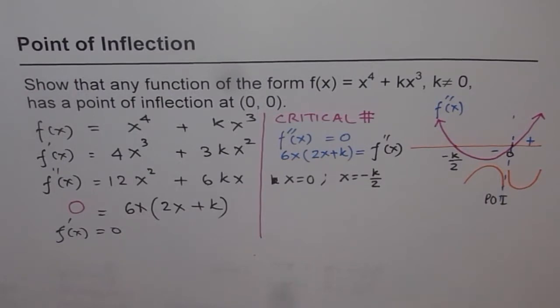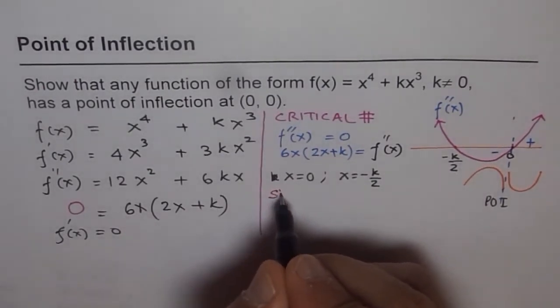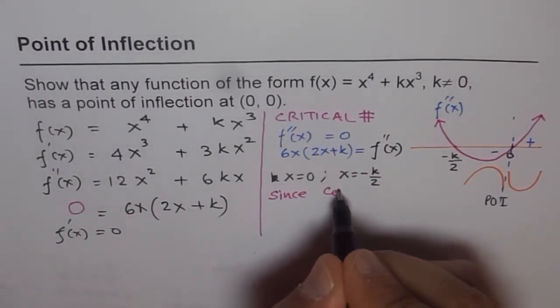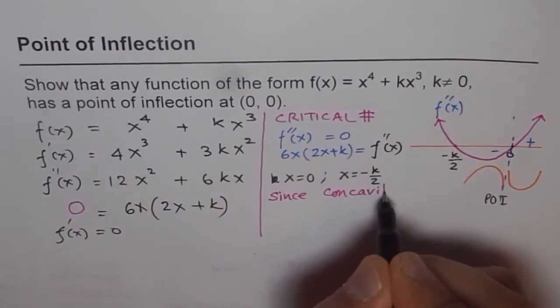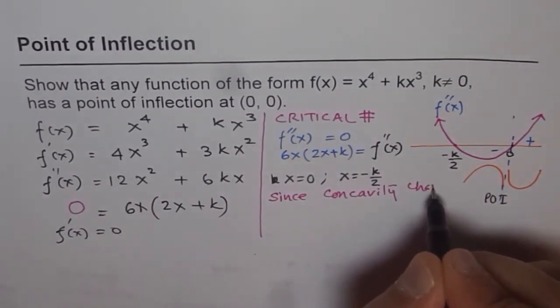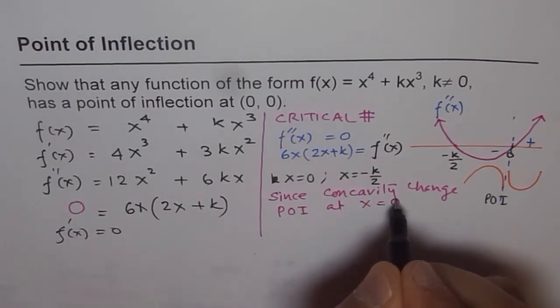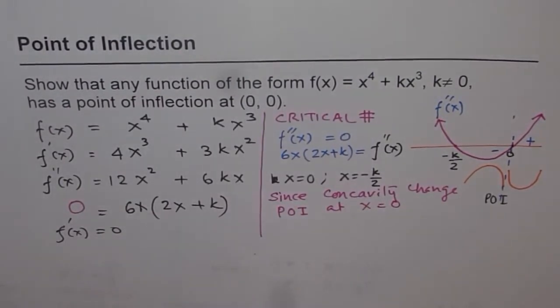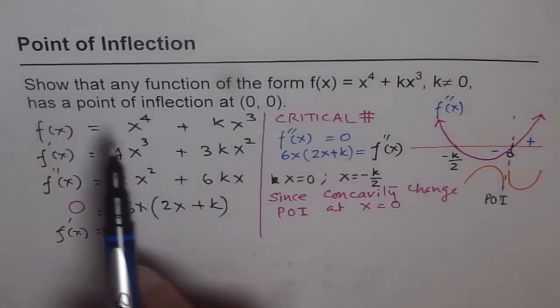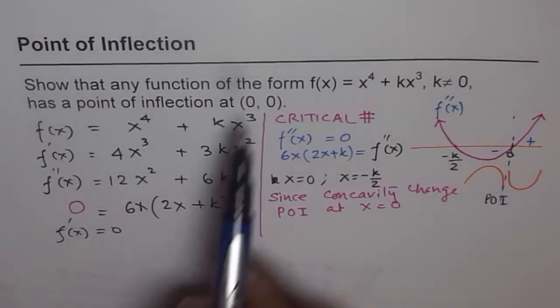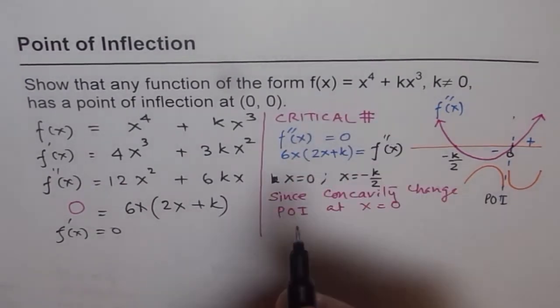So let's write, since concavity changes, we have a point of inflection at x = 0, right? And we say this function has point of inflection at (0, 0). That means what is the value of the function at 0? What is f(0) equals to?